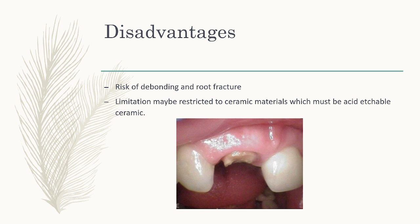The disadvantages are very minimal. First is the risk of debonding, but if it debonds, we can re-cement it again — it rarely happens. There is also the rare risk of root fracture, but it is not like the post and core. A limitation is that it may be restricted to acid-etchable ceramic materials like Empress Emax or zirconia.